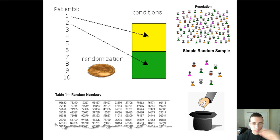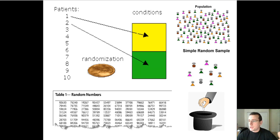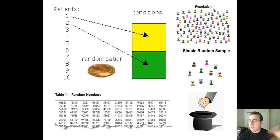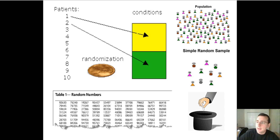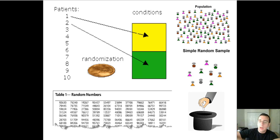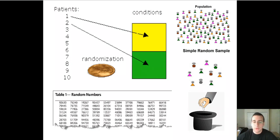There are a lot of ways of doing probability sampling. For example, let's say you have two conditions — you can flip a coin. If you get heads, the person goes to condition one; if you get tails, they go to condition two. You can also put people's names in a hat and draw from the hat to see which group the person goes to.